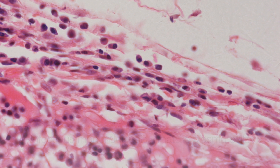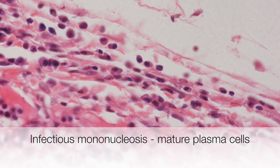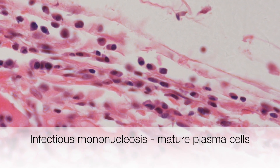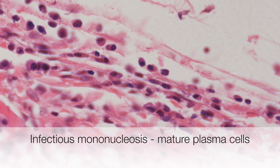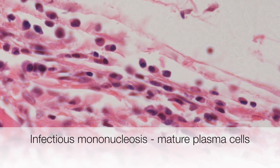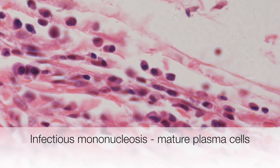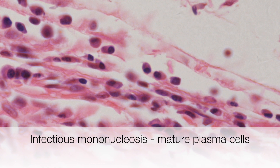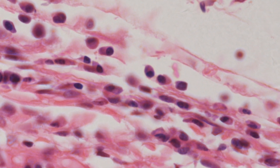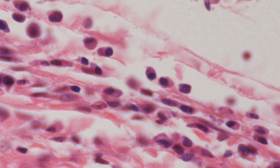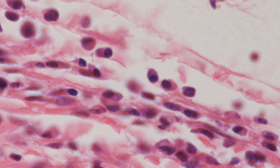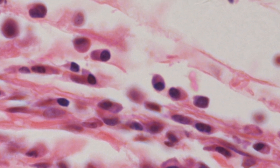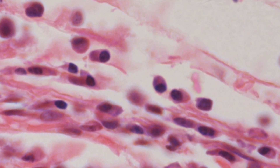And here is a collection of fully mature plasma cells with their eccentric nuclei with the cartwheel pattern of chromatin and purplish cytoplasm. So these cells are polymorphic because they are the same cell line but showing different stages of maturity.